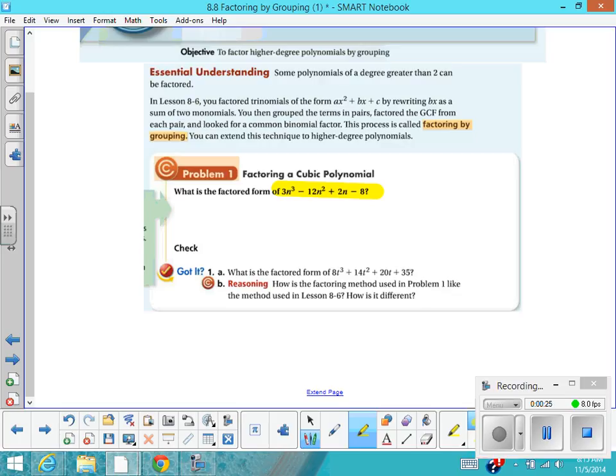You've seen this a little bit in class from time to time. What you want to do is group the terms into two groups, and then basically all you want to do is factor out a GCF from each of those terms individually.